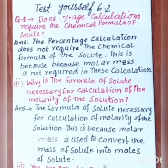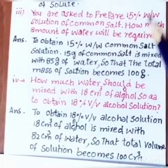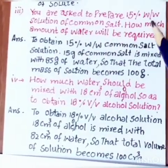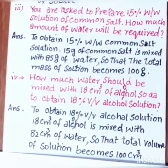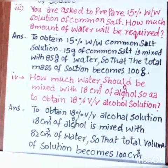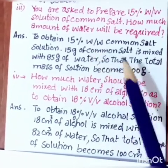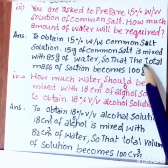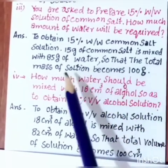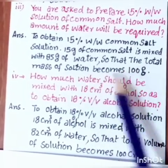Third question: You are asked to prepare a 15% volume by volume solution of common salt. How much water will be required? Answer: 15 grams of common salt is mixed with 85 grams of water so that the total mass of the solution becomes 100 grams.